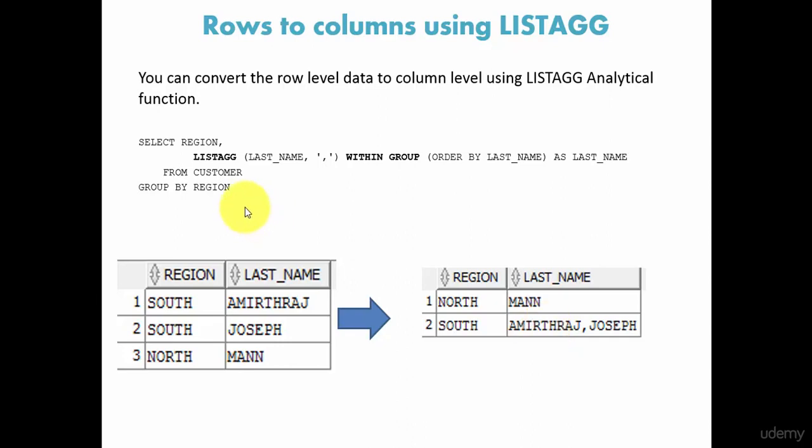You see how simple it is: SELECT the column you need, and LISTAGG for the values you need. You want the last name displayed separated by comma. You can mention whatever separator you want. And you want to say WITHIN GROUP - which group you already mentioned here: region.